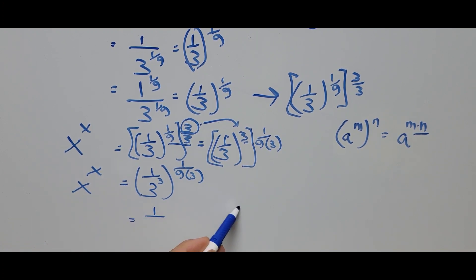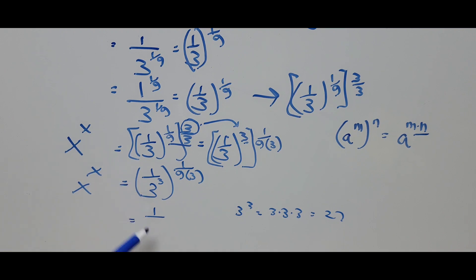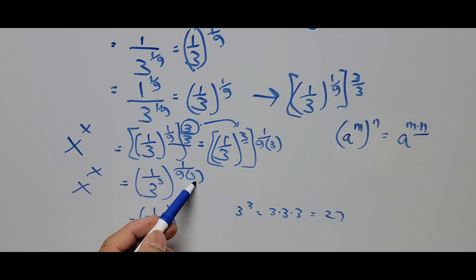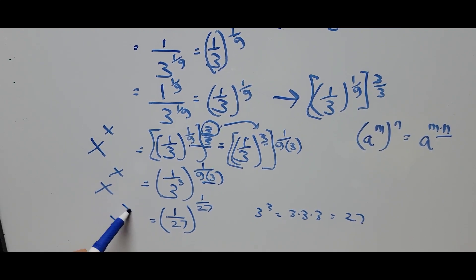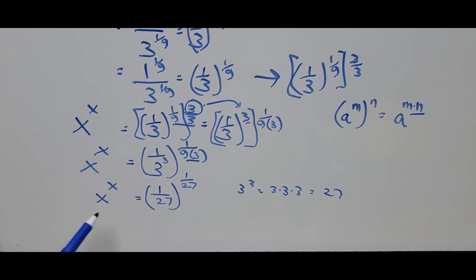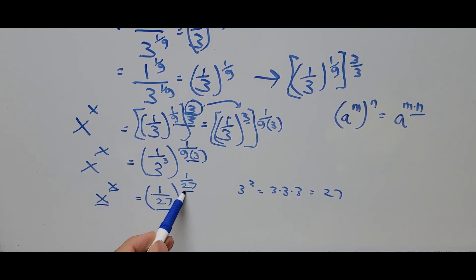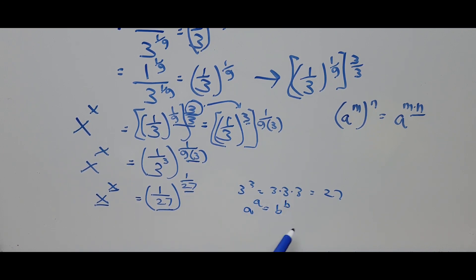Now 3 cubed — that is 3 times 3 times 3 — equals 27. And 9 times 3 is also 27. So this becomes x to the power of x equals (1 over 27) raised to the power of 1 over 27. Just by looking at it, the base and exponent on both sides are the same. Using the formula: if a raised to a equals b raised to b, then a equals b — so equating base to base, x equals 1 over 27.